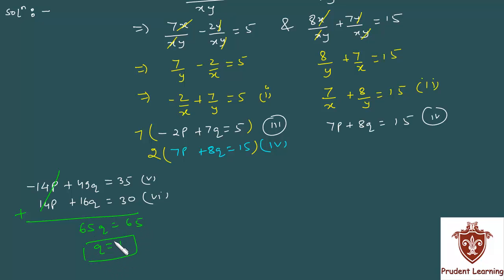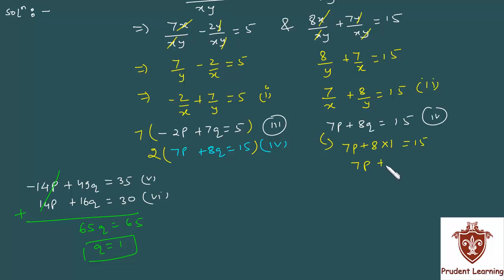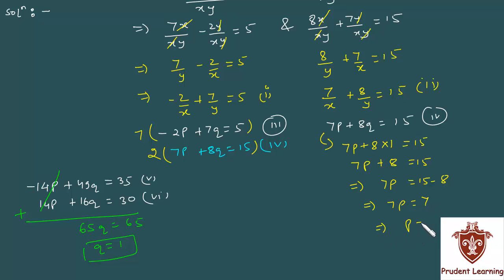Now we substitute the value of q into any equation to find p. Substituting q equal to 1 in equation 4, we get 7p plus 8 into 1 is equal to 15, so 7p plus 8 is equal to 15. Therefore 7p is equal to 7, which gives us p equal to 1.